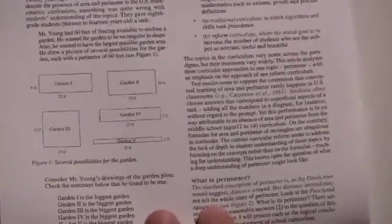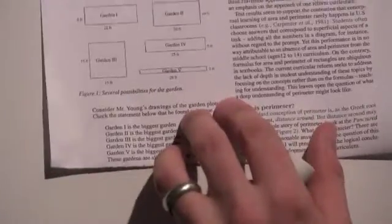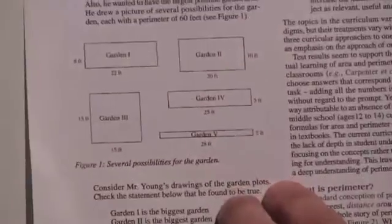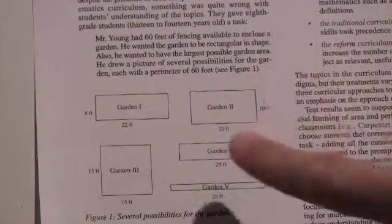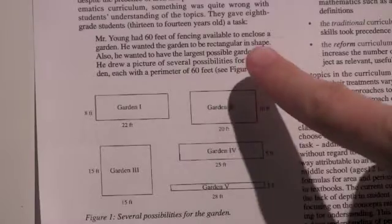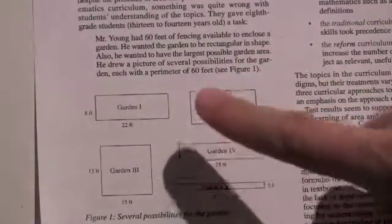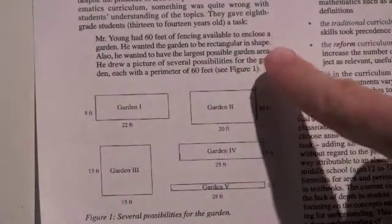I'm going to try to zoom in on this part so it shows up on camera, and I'm going to ask you the question at the beginning of this paper. Mr. Young has 60 feet of fencing available to enclose a garden. He wanted the garden to be rectangular in shape.